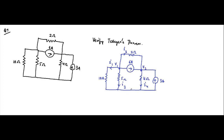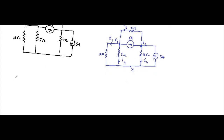We apply KCL at two nodes, node one and node two. At node one: i1 is flowing away from the node, i2 is flowing away from the node, 6 ampere is flowing away from the node, and i3 is also flowing away from the node. So all of them are in one direction.